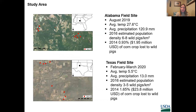A series of cafeteria-style tests with free-ranging wild pigs were conducted at study sites in Alabama and Texas. The first field trial was conducted in August 2019 in southern Alabama, where the average temperature was approximately 82 degrees Fahrenheit or 27.6 degrees Celsius, and 4.8 inches of rain fell throughout the approximately two-week study. The landscape was characterized as part of the southeastern plains ecoregion — a mosaic of croplands, pasture lands, and woodland forests of oak, hickory, and pine. In 2016, the estimated wild pig population density in Alabama was six to eight wild pigs per square kilometer, and in 2014, corn production value lost to wild pigs was approximately $1.95 million.